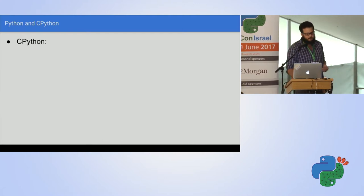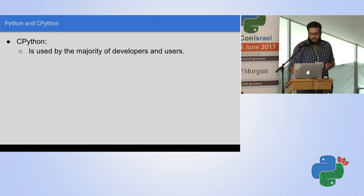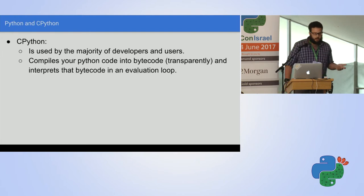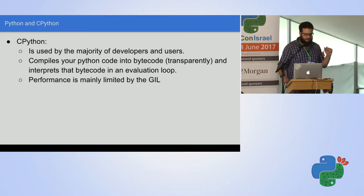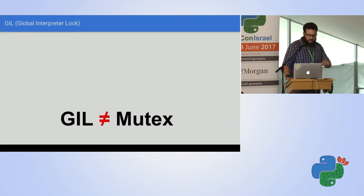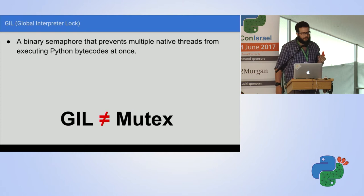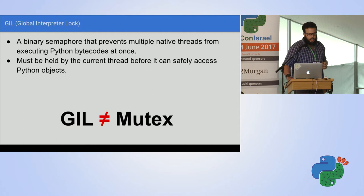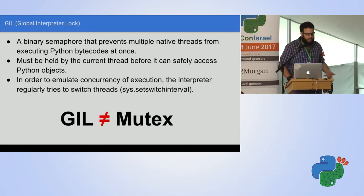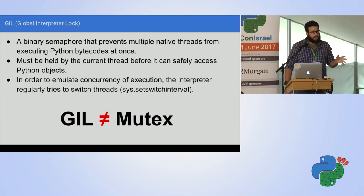CPython is used by the majority of developers. It basically compiles your Python code into bytecode and interprets bytecode in an evaluation loop. Performance is mainly limited by the GIL. The GIL is a binary semaphore that prevents multiple native threads from executing Python bytecodes at once. It must be held by the current thread before it can safely access Python objects.